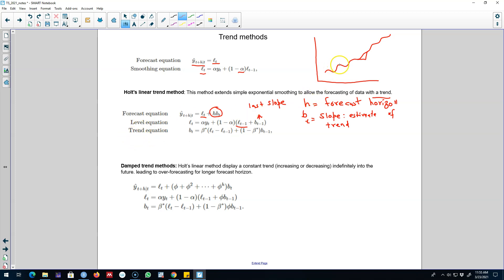In addition to these two equations, since we are introducing a trend in this time series, we have to introduce a third equation here. Now this third equation will estimate the slope, and this slope will depend on the change in the level from time t to t minus 1 and the slope in the previous time period.